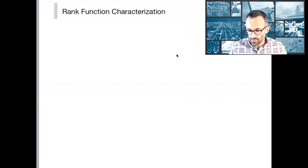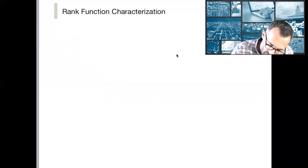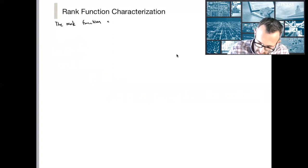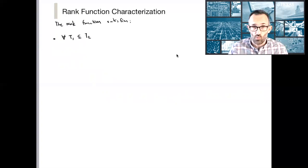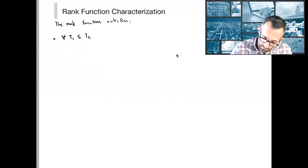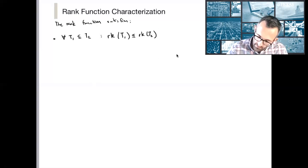Now let's go back to the rank function and see what properties it has to satisfy — we're going to see another characterization of the rank function. The rank function satisfies the following. First, for any T1 that's a subset of T2, the rank of T1 is less than or equal to the rank of T2. In other words, the rank satisfies a monotonicity property.